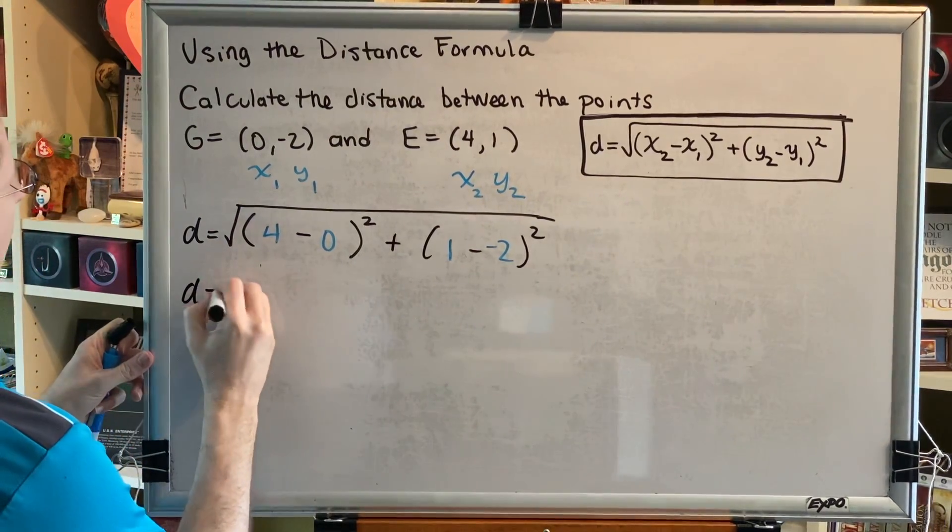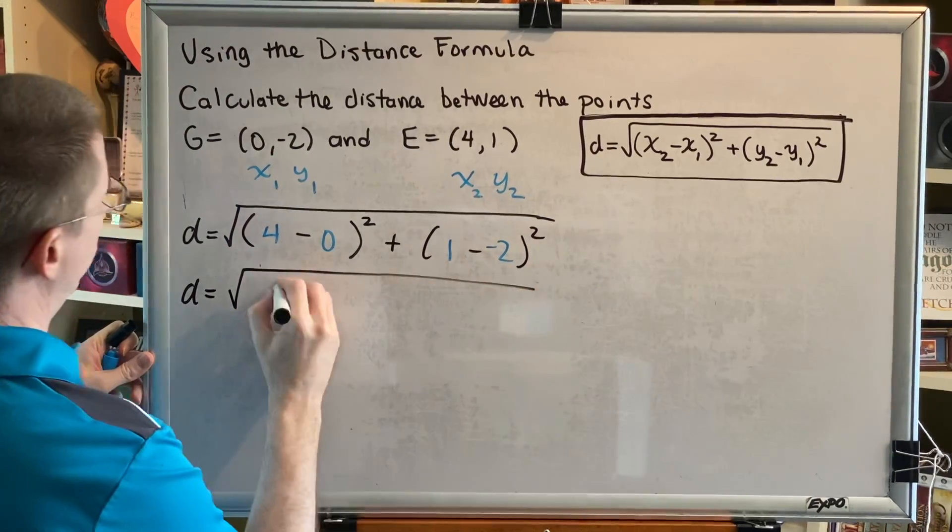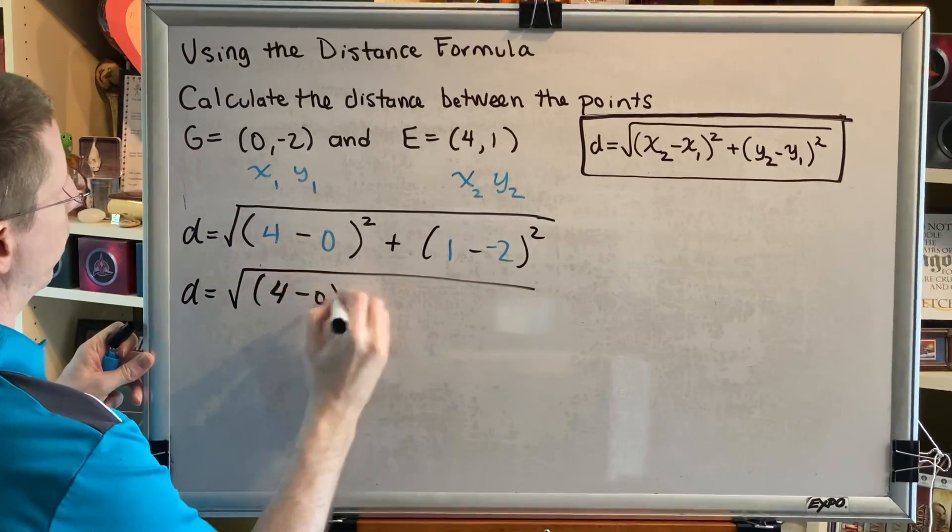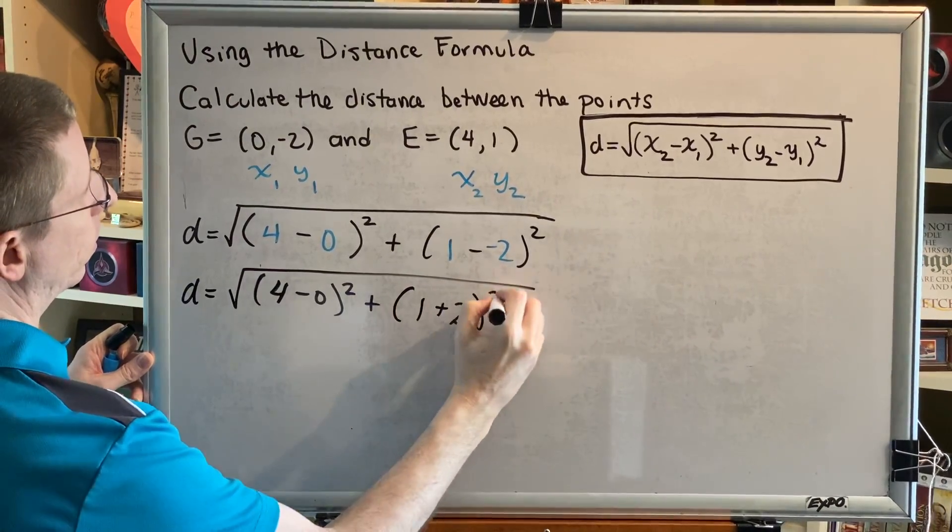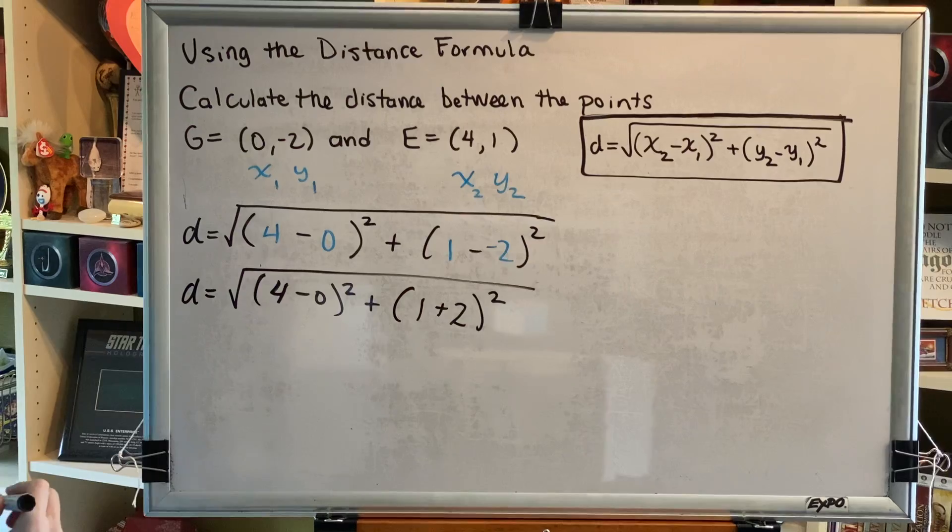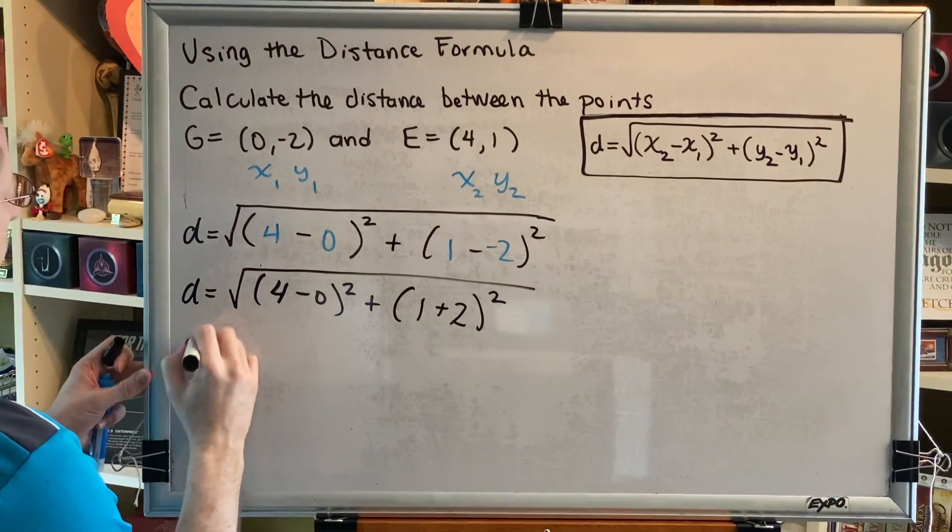Okay, now we're going to simplify. Subtracting a negative is the same as adding. So instead of 1 minus negative 2, we're going to have 1 plus 2.